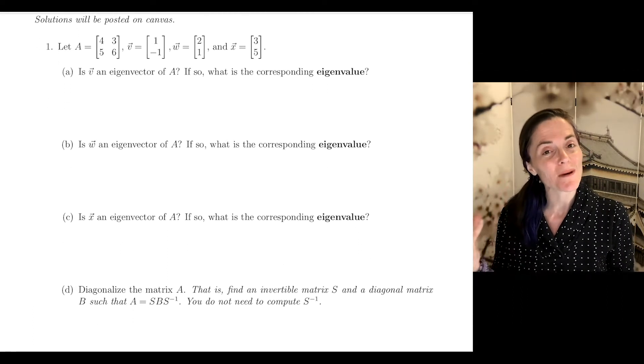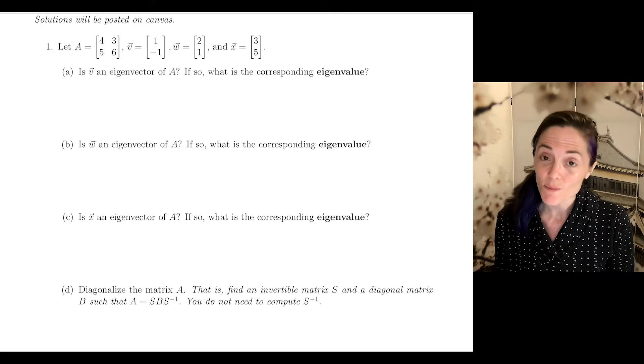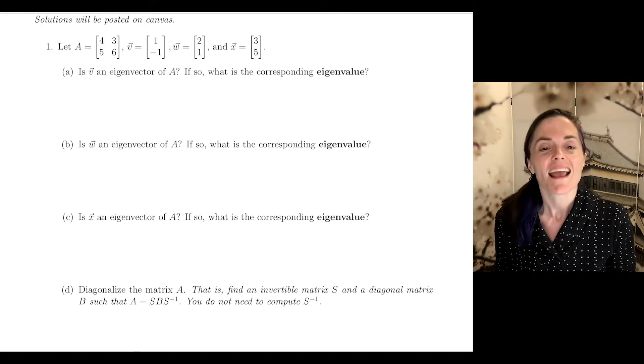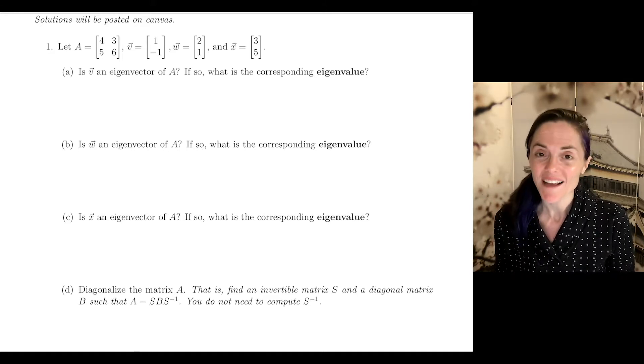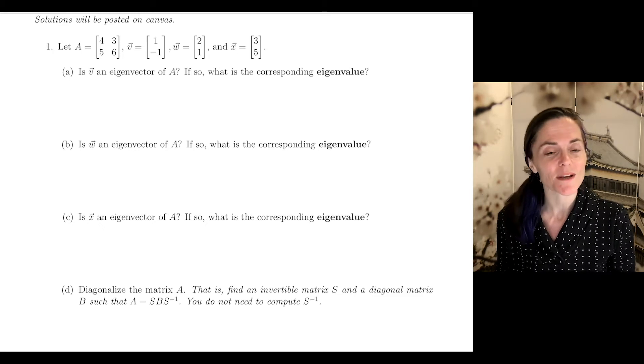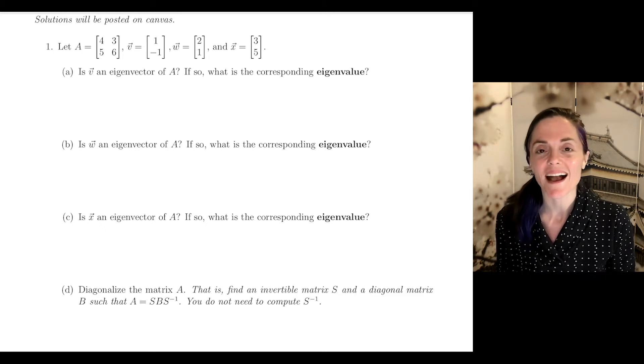Let's begin. In this first problem, we're given a two by two matrix A and three vectors in R². We want to figure out if each one is an eigenvector for this matrix, and if so, what is the corresponding eigenvalue?